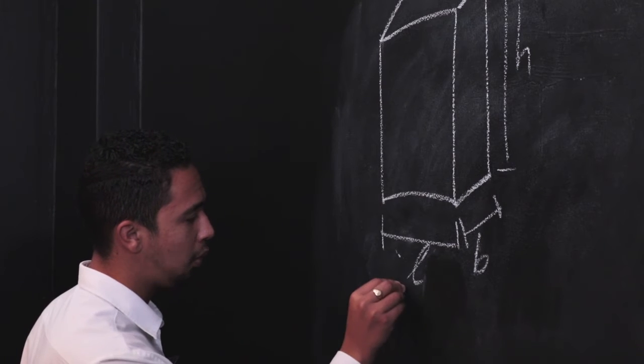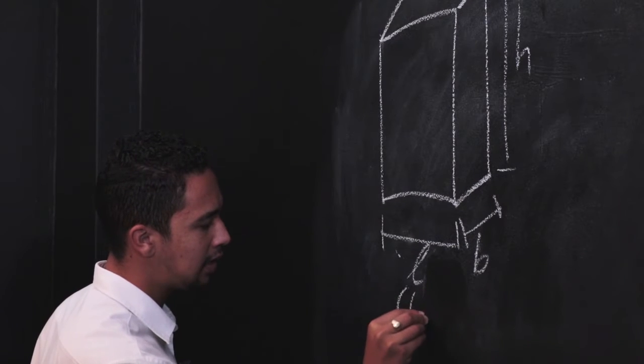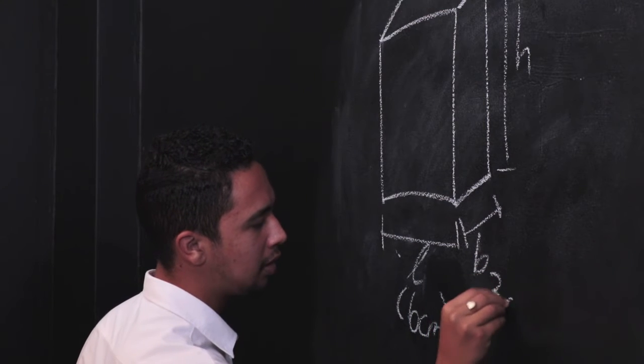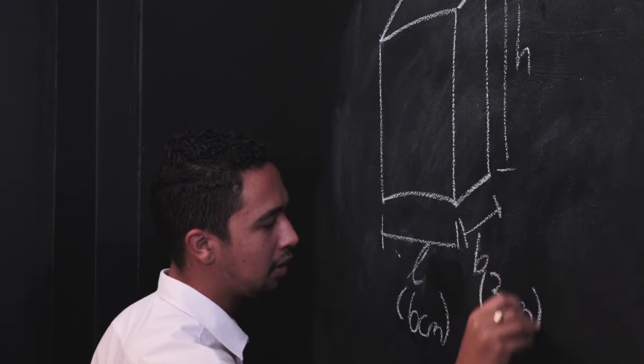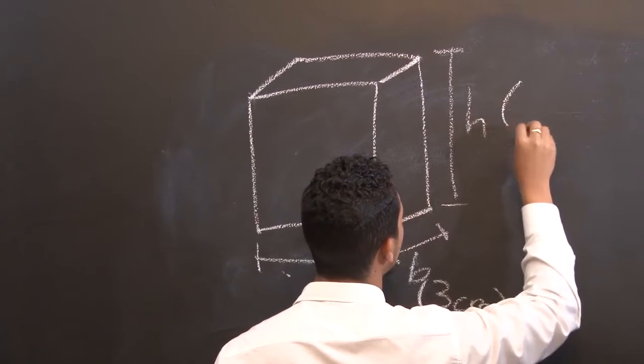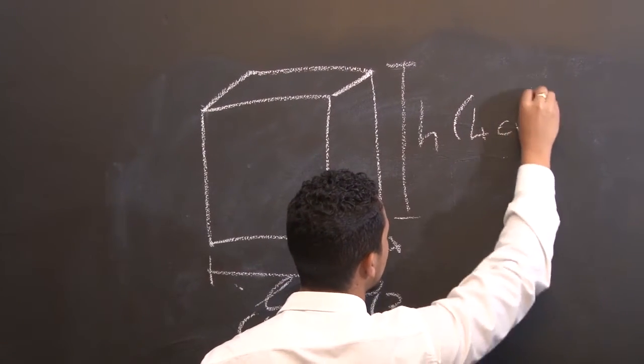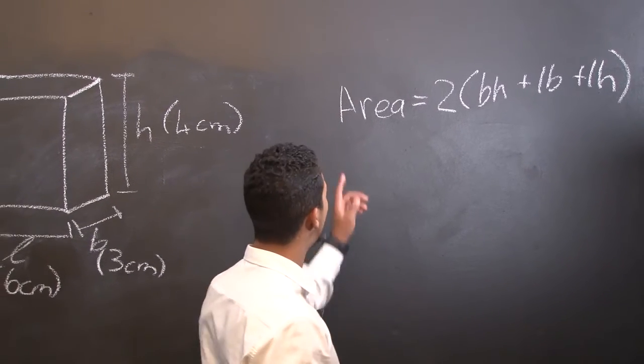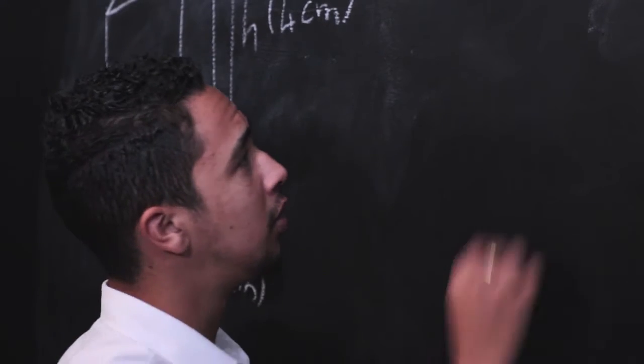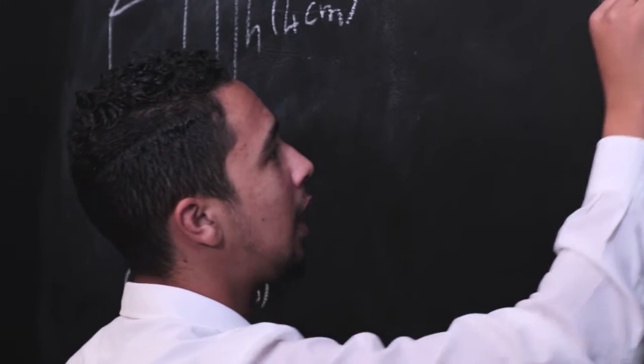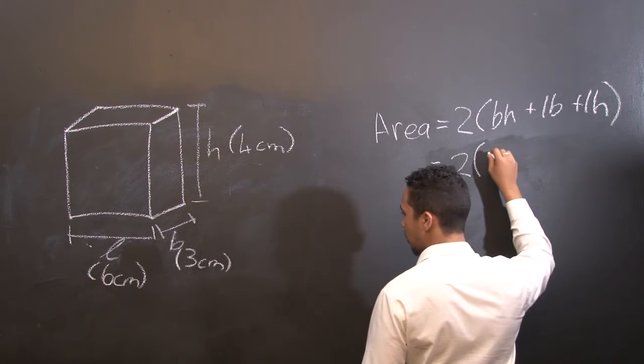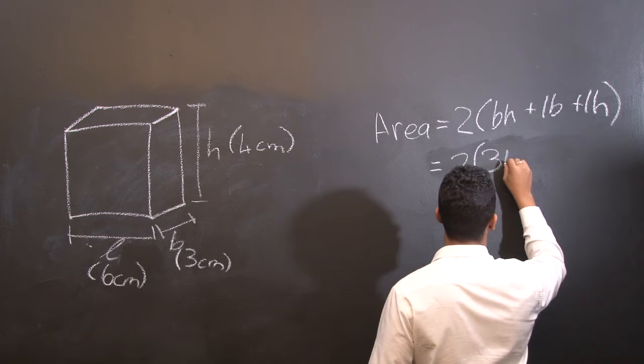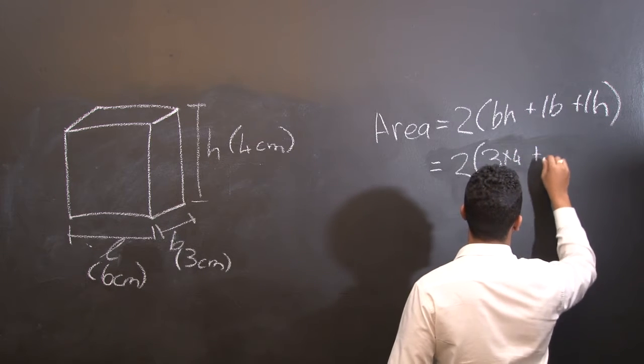So in our example, we are given 6 centimeters as the breadth, 3 centimeters as the length, and 4 centimeters as the height. So we are given this formula in the learner guide. Let's substitute the formula with the dimensions: breadth, which is equivalent to 3, height is 4, plus length which is 6 times by breadth which is 3.